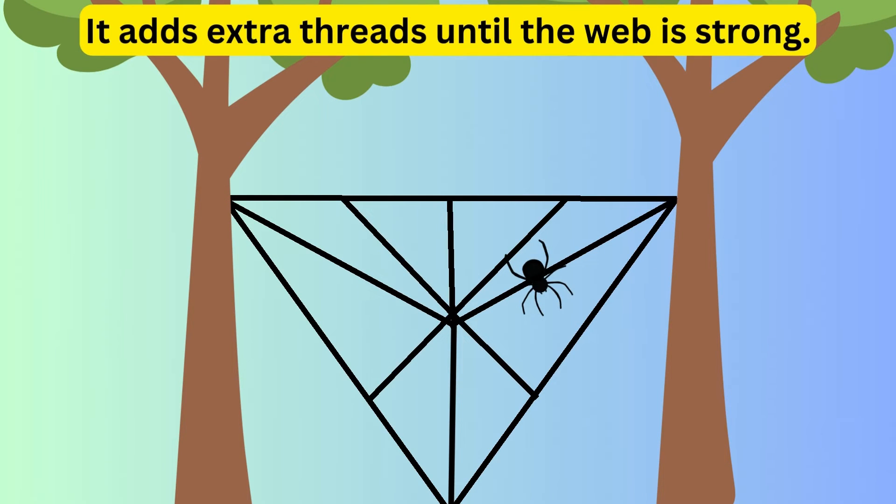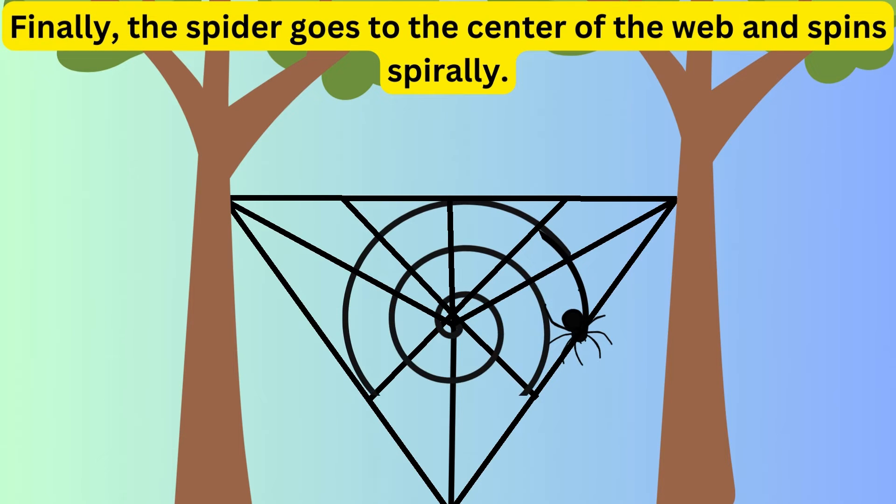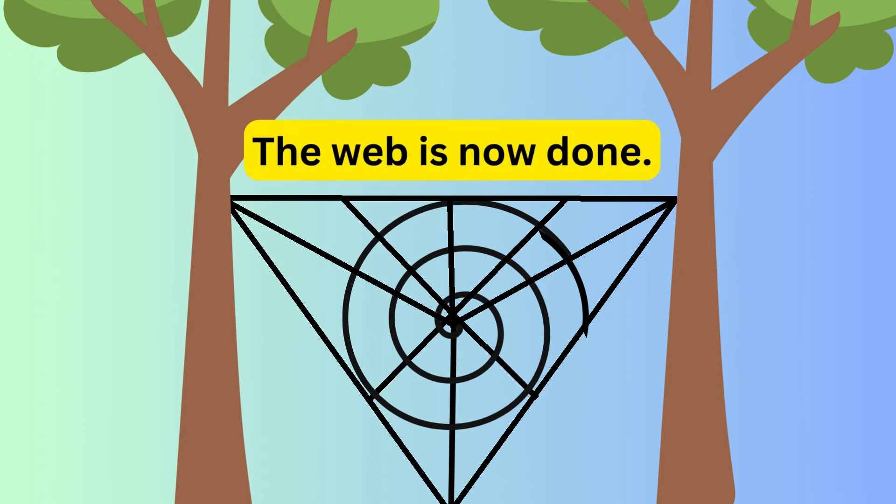It adds extra threads until the web is strong. Finally, the spider goes to the center of the web and spins spirally. The web is now done.